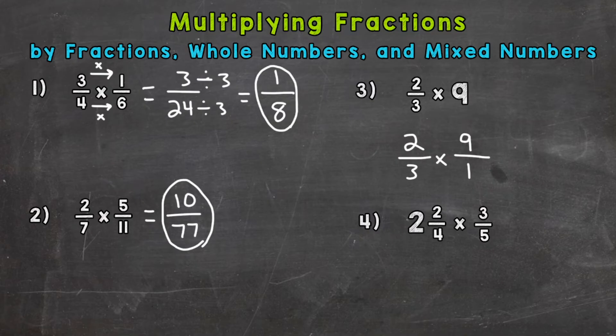Now multiply straight across. Two times nine is 18. And three times one is three. So we end up with an improper fraction. Which we don't want to leave our answer as improper. So we need to get it to a mixed number, or maybe it works out to be just a whole number. So we do that by dividing the numerator by the denominator. So 18 divided by three. How many whole groups of three can we pull out of 18? Well six. There is no remainder. So our answer is six there. If you need a little more help with converting improper fractions to mixed numbers or whole numbers, I drop my video about that down in the description.